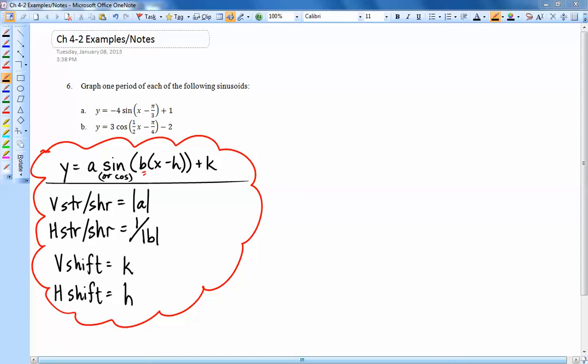All right, so let's look at 6b for this problem. We've got y equals 3 cos(1/2 x minus π/4) minus 2. And over here, I have the same notes that we came up with in class, the general notes.